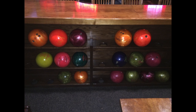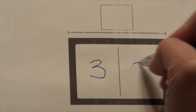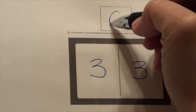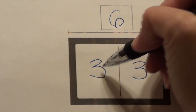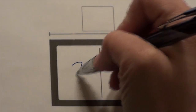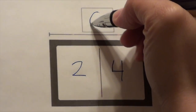Now let's look at the second or middle row. There are three on the left and three on the right. Three plus three equals a whole of six. Finally, let's look at the bottom row. Two bowling balls on the left and four on the right. Two plus four equals a whole of six.